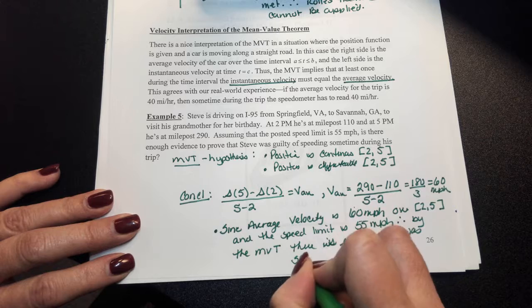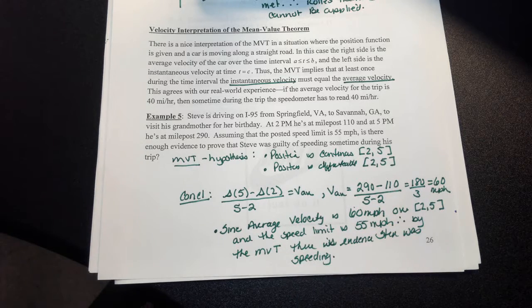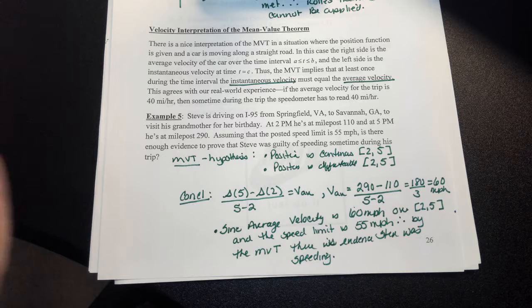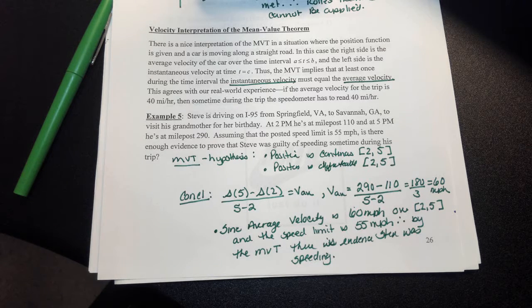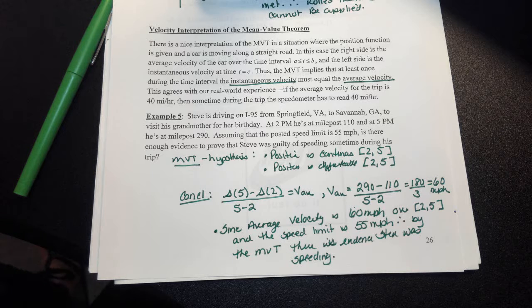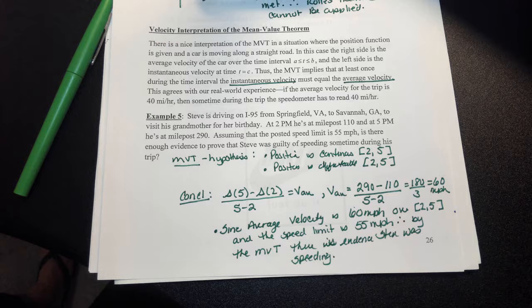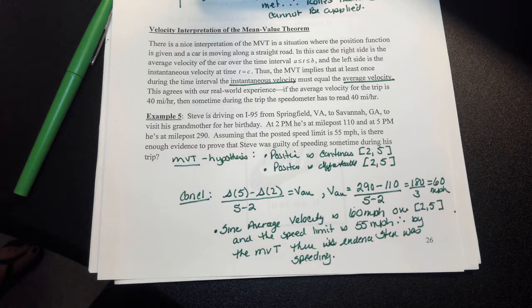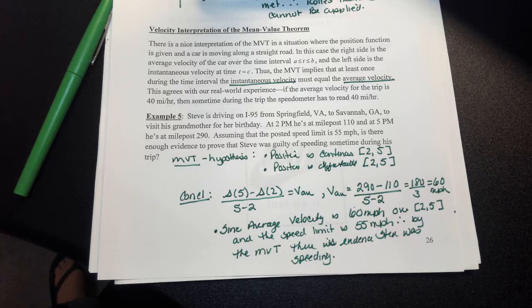Now, your parents can just track you on that Life360 app and know exactly what you're speeding. All right. So, any questions on the mean value theorem? Okay, ladies and gentlemen. So, if you guys want to clear everything off.